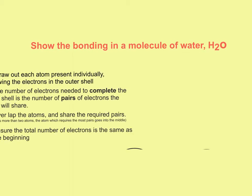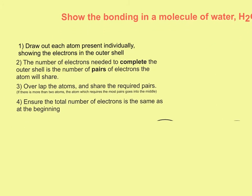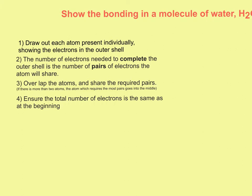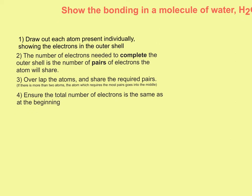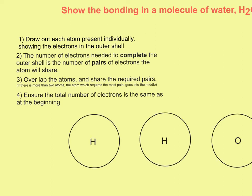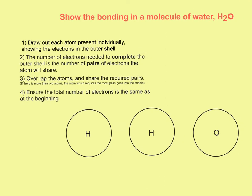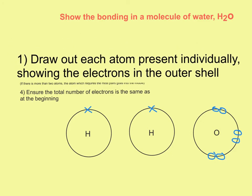So our steps are: draw out each atom present individually, show the number of electrons in the outer shell, work out the number of pairs needed, overlap the atoms, and make sure we have the same number of electrons at the end as at the beginning. Water is H2O, so we're going to draw out two hydrogens and one oxygen. If you look to the periodic table, hydrogen has one electron in its outer shell — true for both hydrogen atoms. Oxygen is in group 6, so it has six electrons in its outer shell.